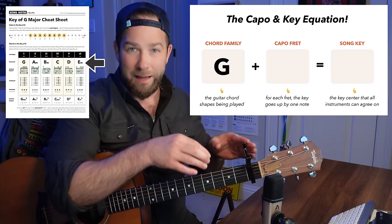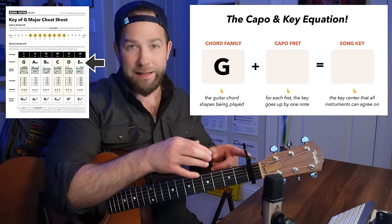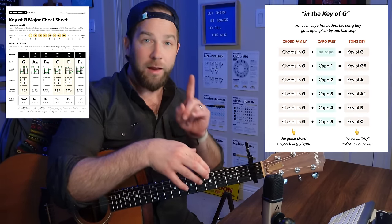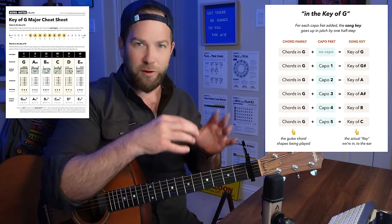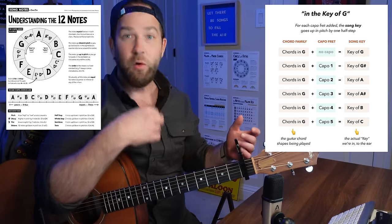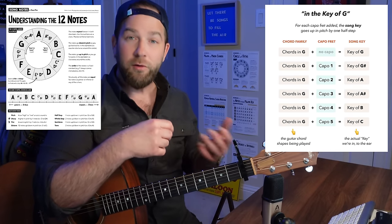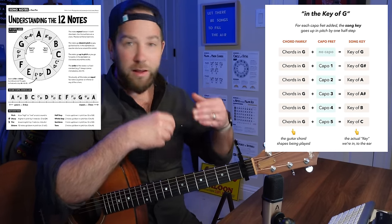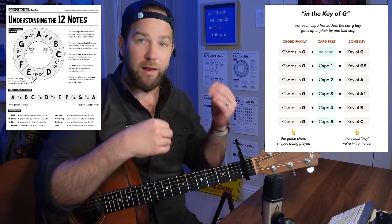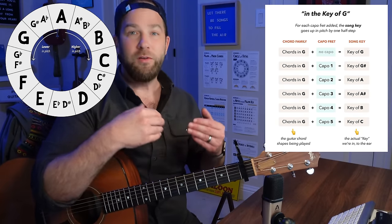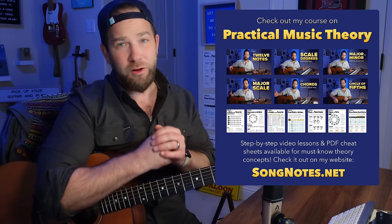If we add a capo, for every fret we add a capo it's going to take our key up in pitch by one half step. This gets into a little bit of music theory — you need to understand the 12 notes and the order of the notes. They go in both directions around the circle of notes: clockwise goes up in pitch, counterclockwise goes down. Every unit around the circle is one half step. So if you're on A and go up a half step, you're on A sharp, then B, then C. If all this is new to you, check out my practical music theory course.